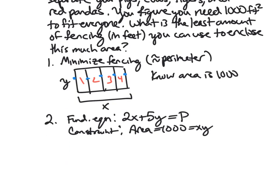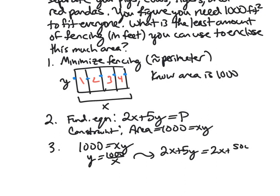So, again, our P function has two variables. We would like to get it down into one. And we can, again, use our constraint. So 1,000 is X times Y. And so Y is 1,000 over X. And using that substitution, we get 2X plus 5Y is going to be 2X plus 5,000 over X. And so we could call this our P of X.